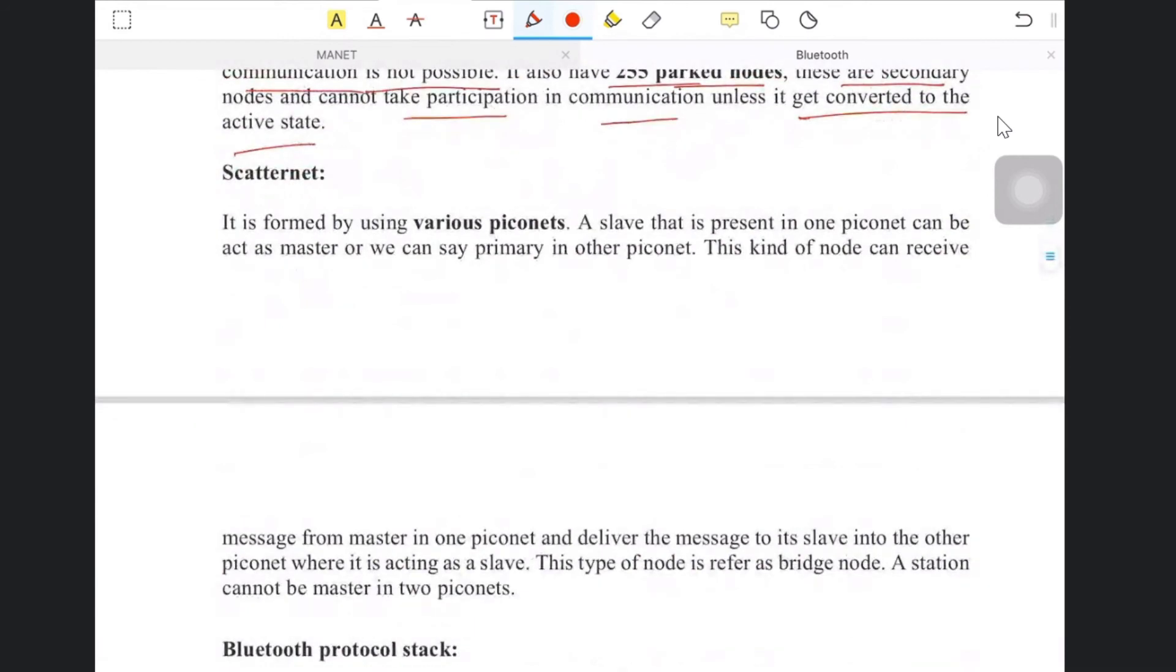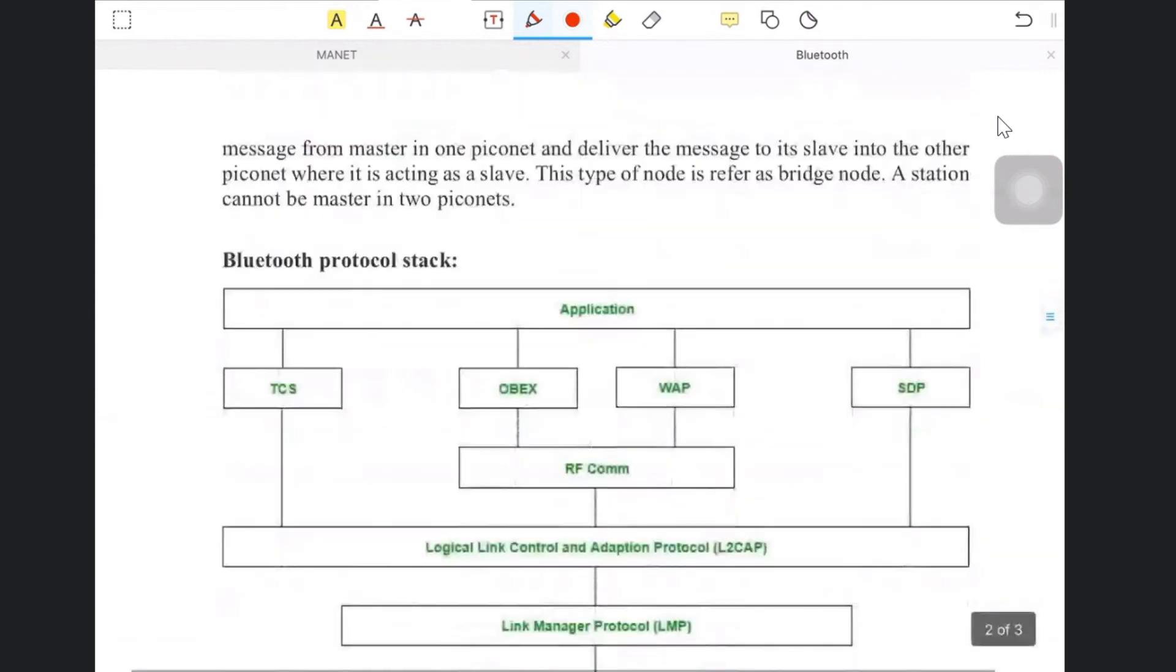A combination, as I told you, is formed by various Piconets. A slave that is present in one Piconet can act as a master or we can say primary in other Piconets. The important point is: a slave that is present in one Piconet can act as a master or primary in another node.